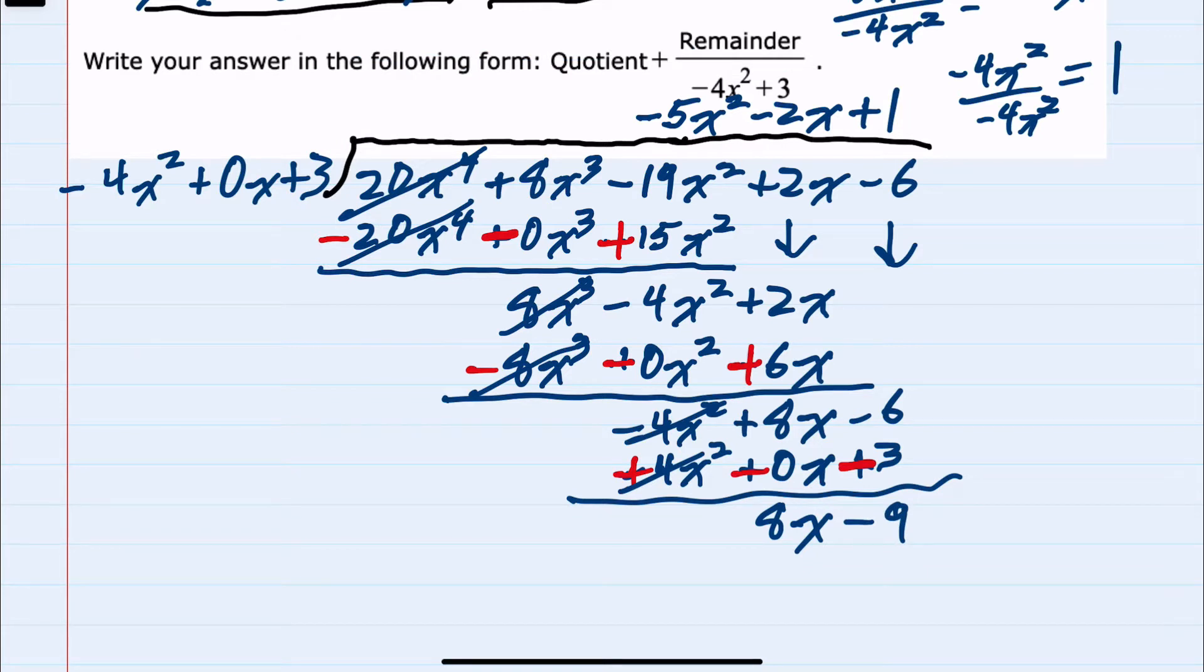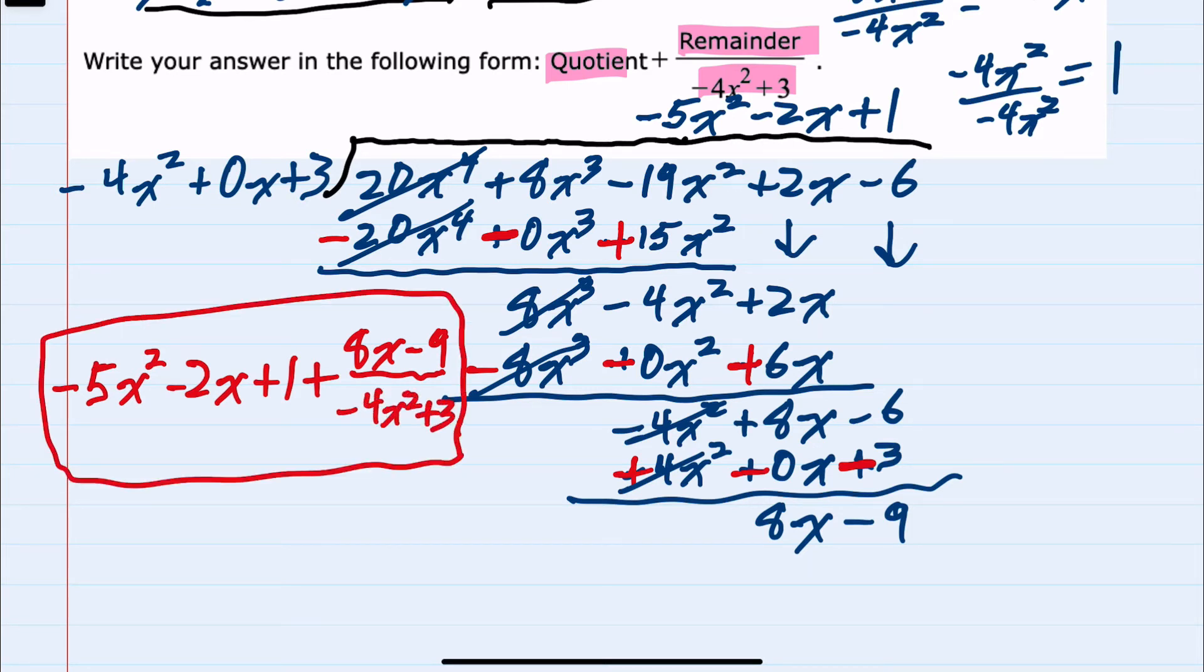I can look back at the format that we were asked to use. Quotient plus the remainder over the divisor. The quotient is along the top plus the remainder, 8x minus 9 at the bottom, over the original divisor, which was our minus 4x² plus 3. This would be our solution.